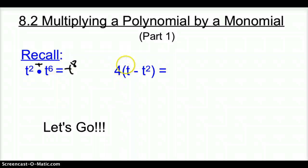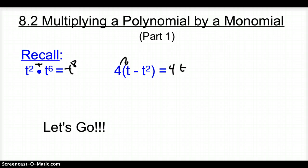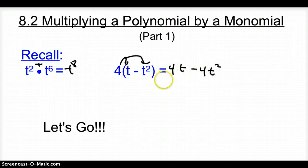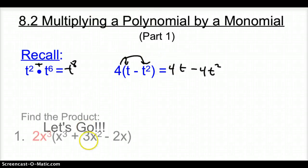It's going to be important. Remember what we would do where we have a couple variables or some numbers inside the parentheses and a 4 outside the parentheses? We would use the distributive property, so we'd take that 4 times t to get 4t, and then also take the 4 times t squared to get negative 4t squared. This is what we're going to be doing today — basically the distributive property, just on steroids.